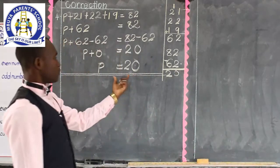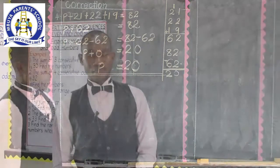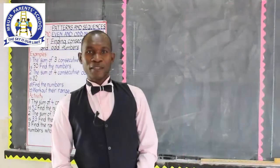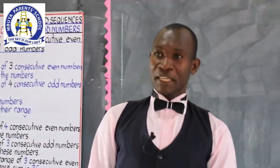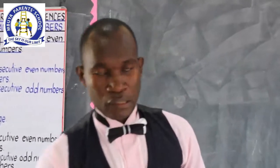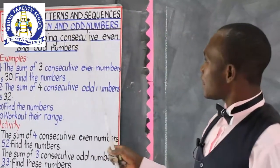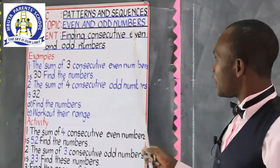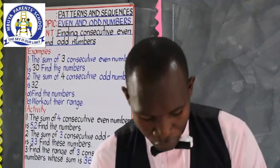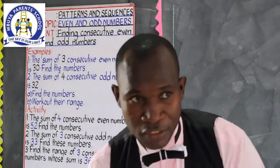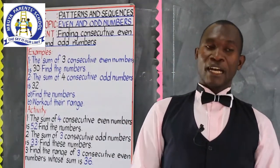This was our answer for question 4. Yes, my dear children, our lesson for today is about finding consecutive even and odd numbers. We are going to look at finding consecutive even and odd numbers. Here we need to have some facts about these two types of numbers.